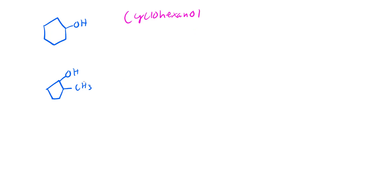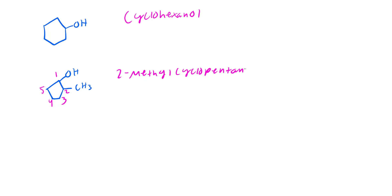For this one, you still don't have to number the location for the alcohol. CH3 is just a way to say it's a methyl group. We start counting: 1, 2, 3, 4, 5 - that's five, so cyclopentane. We have a methyl here, so that's a 2-methyl. Combining: 2-methyl-cyclopentanol.